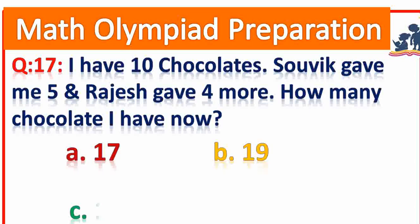Question number 17. I have 10 chocolates. 10 plus 5 plus 4 is equal to 19. Very good.